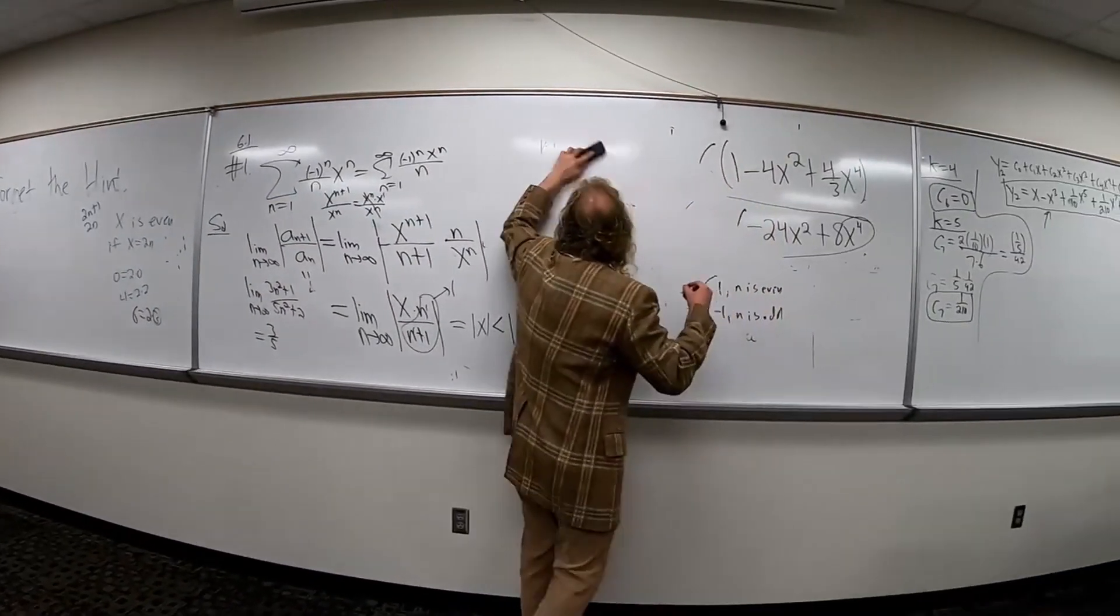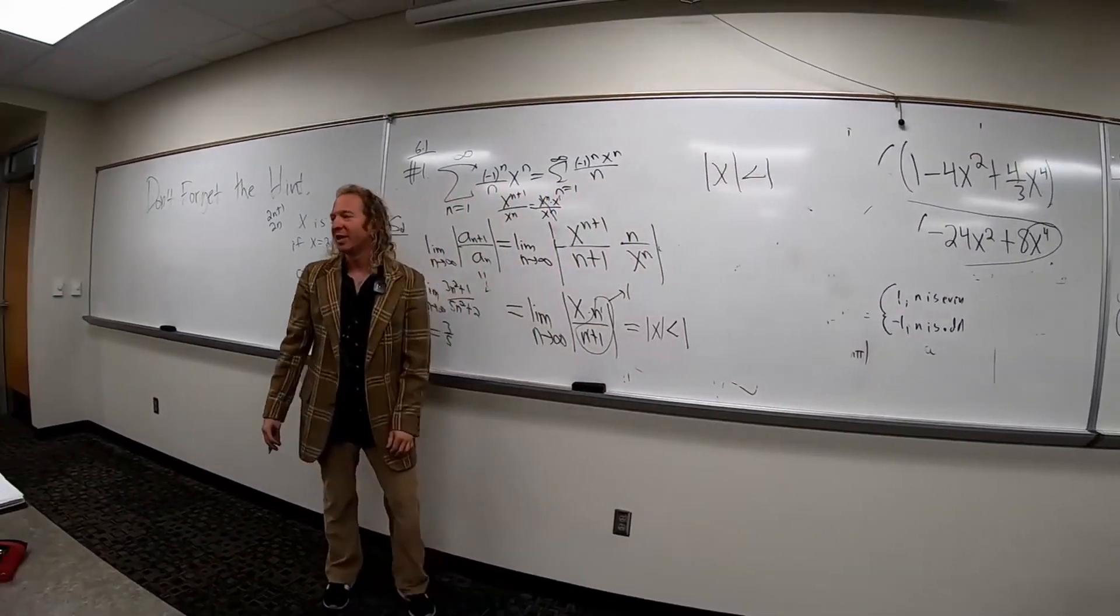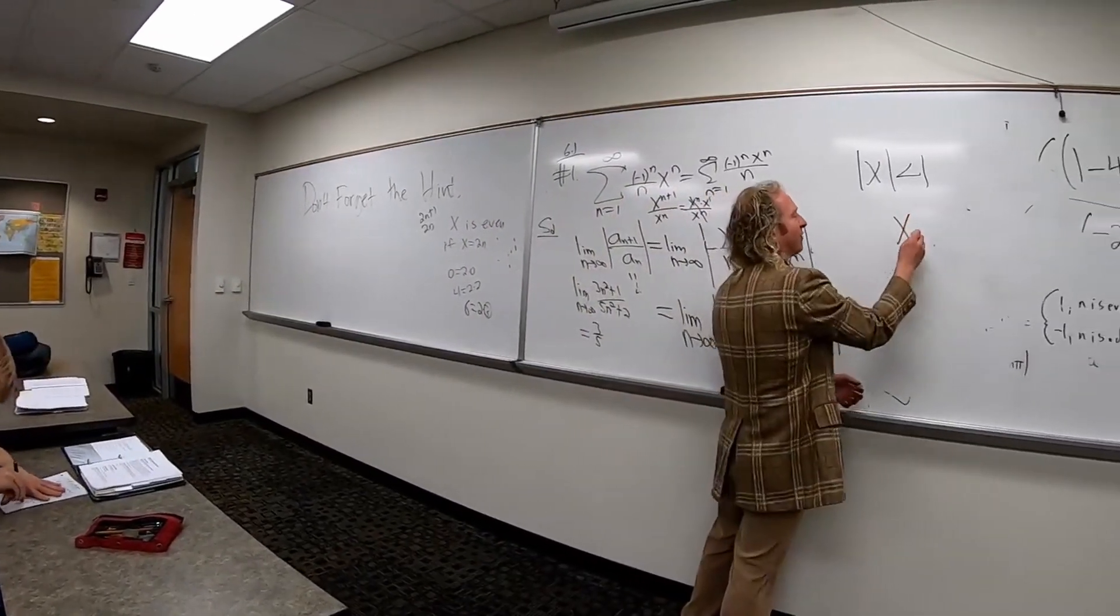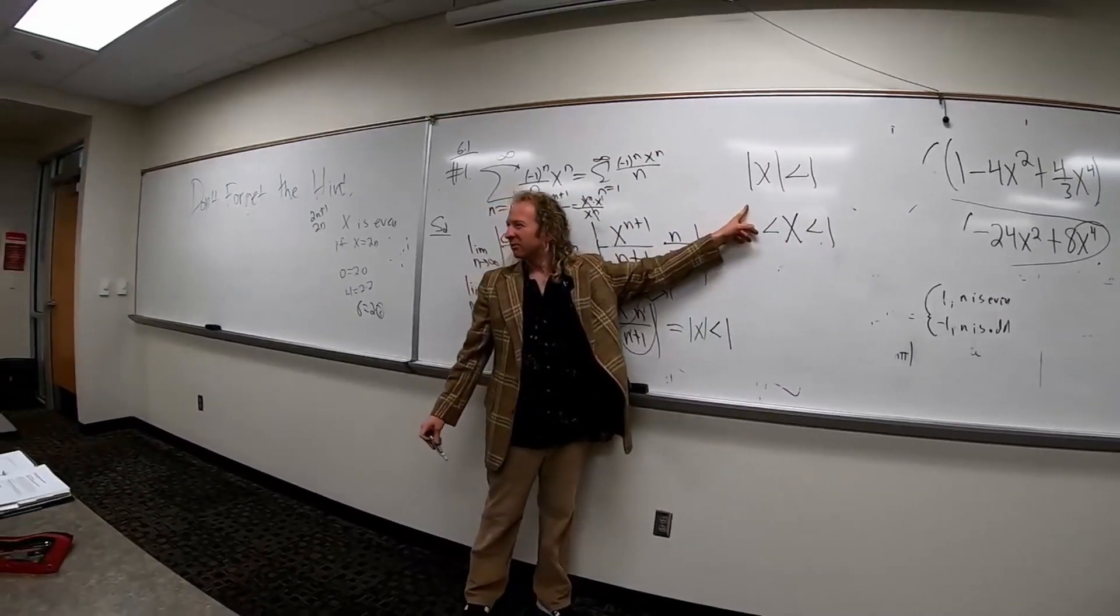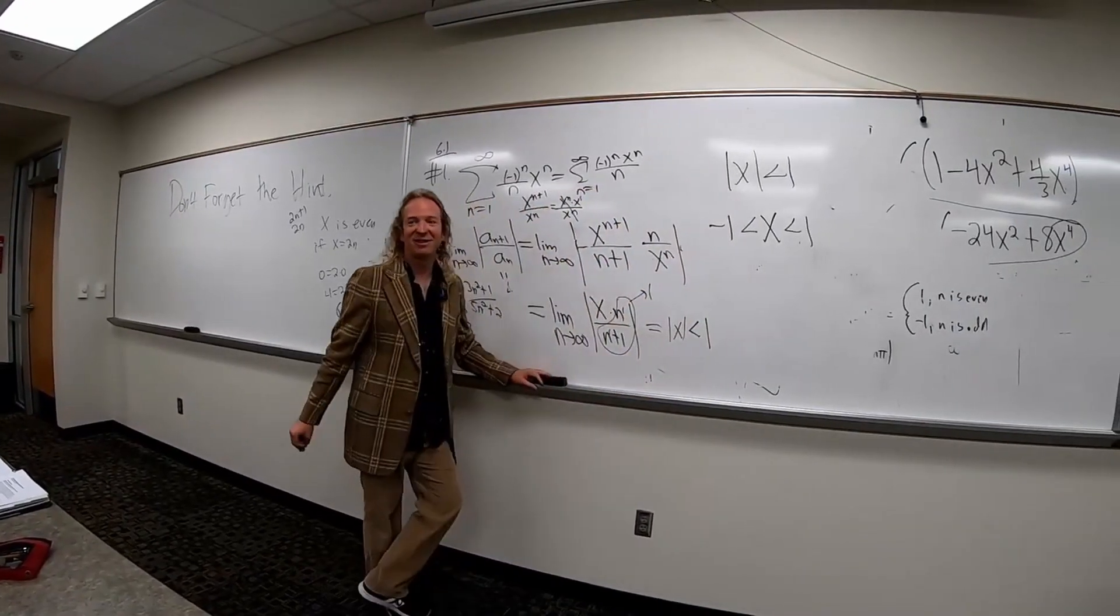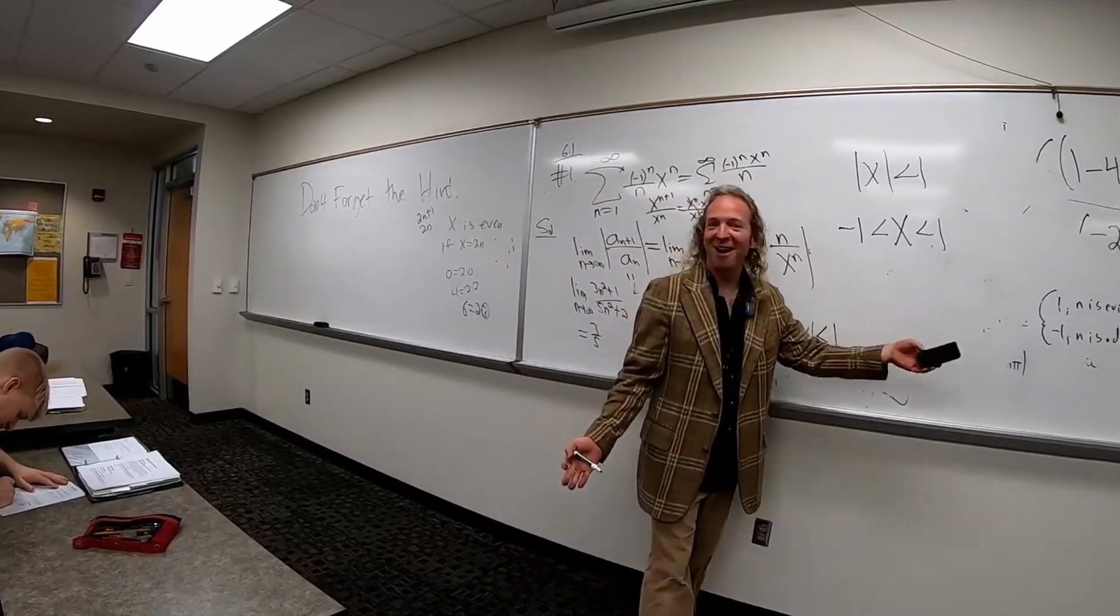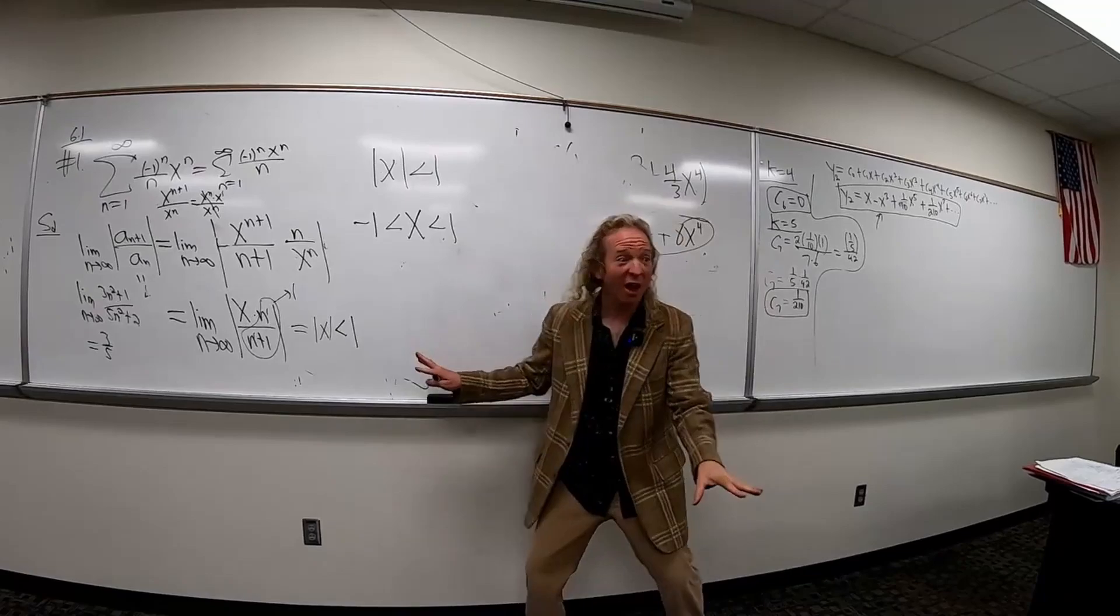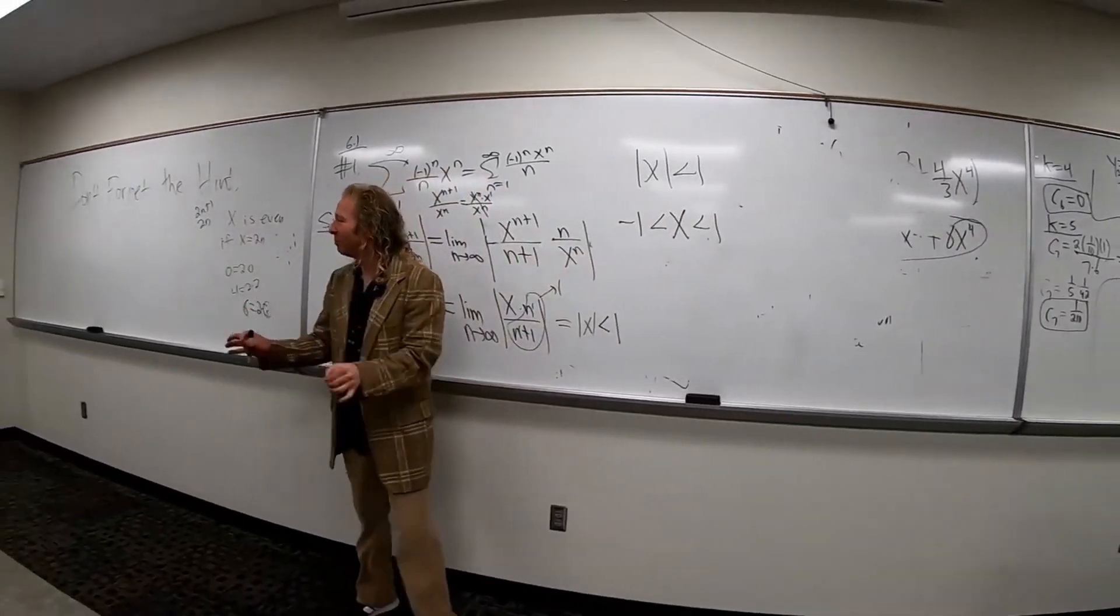So now we have to solve this inequality. So we have the absolute value of x less than 1. And then we drop the absolute value. So you have a 1 here and then here. What goes here? Do you remember? Negative 1. Very good. We're not done. So we're looking for the interval of convergence. Now we have to check the endpoints. So now you've got to take these numbers and you have to plug them into the original series to figure out whether it converges or diverges there.